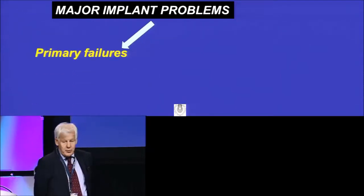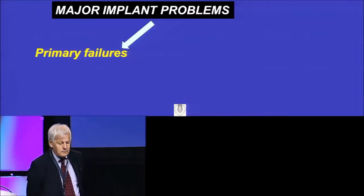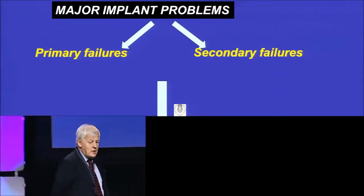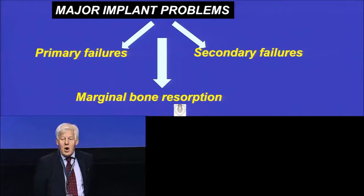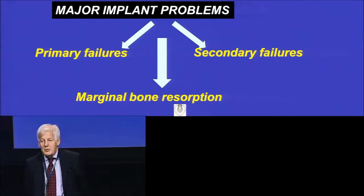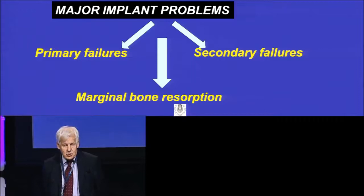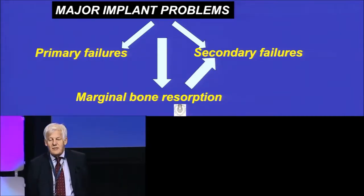So what can we then learn if we study implants from different papers? We can sum up to say that there are a number of major implant problems, and those may include primary failures, secondary failures, and indeed also marginal bone resorption. And bone resorption in turn may, but must not, lead to secondary failures.